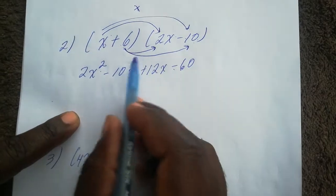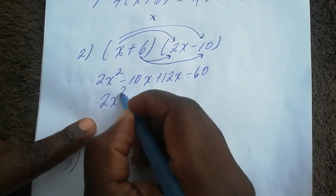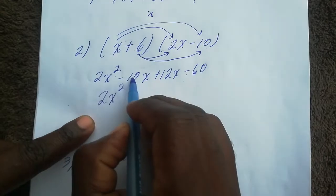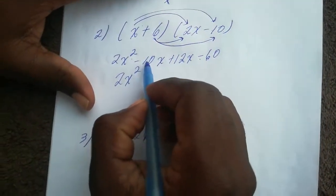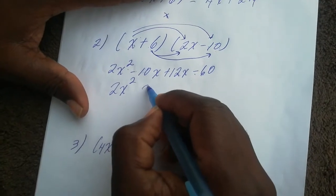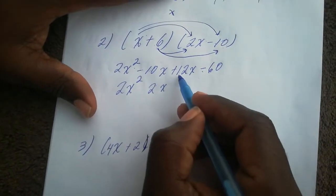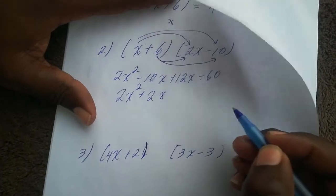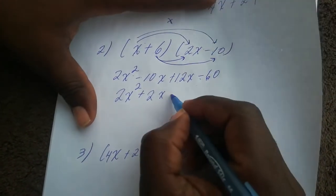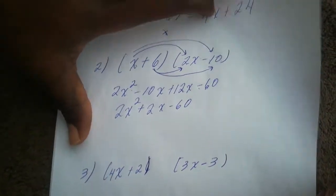Now we look for like terms. The x-terms are the same so we operate them. We have 2x squared, and since the signs are not the same we subtract: 12 minus 10 is 2x, keeping the sign of the greater number which is positive, giving us positive 2x. Then minus 60 stands by itself, so the answer is 2x² + 2x − 60.